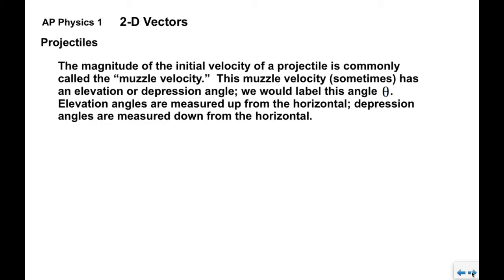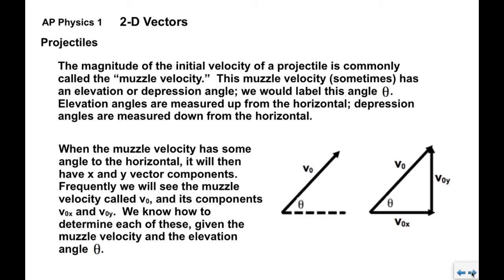The magnitude of the initial velocity of a projectile — again, this is as it leaves the launcher — is commonly called muzzle velocity. It can conceivably have an elevation or depression angle; we call this angle theta. Elevation angles are measured up from the horizontal; depression angles are measured down from the horizontal. When the muzzle velocity has some initial angle to the horizontal, it will have an x and a y vector component, written as v-naught-x and v-naught-y, which we find using our vector component formulas.